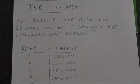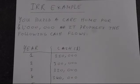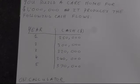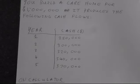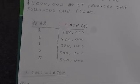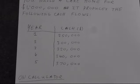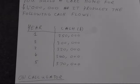So you build a care home and you spend a million dollars building this care home. That's a total investment that you're putting out. And it produces the following cash flows. This care home is very profitable. So first year we've got $250,000, second year $300,000 and so on. So how do we do this calculation on the calculator?